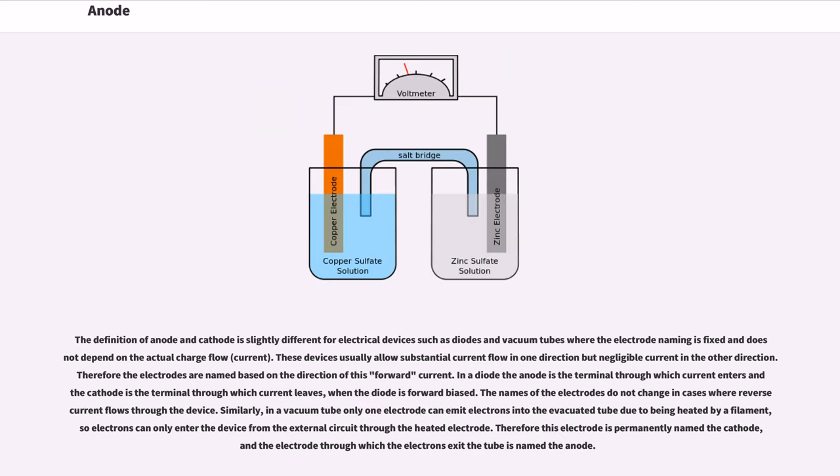The definition of anode and cathode is slightly different for electrical devices such as diodes and vacuum tubes where the electrode naming is fixed and does not depend on the actual charge flow (current). These devices usually allow substantial current flow in one direction but negligible current in the other direction. Therefore the electrodes are named based on the direction of this forward current. In a diode the anode is the terminal through which current enters and the cathode is the terminal through which current leaves, when the diode is forward biased.